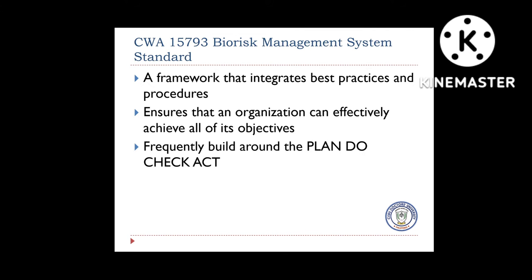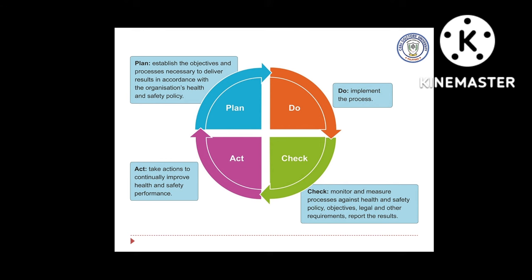A framework that integrates all best practices and procedures can be found in the CWA 15793 Biorisk Management System Standards. This ensures that an organization can effectively achieve all of its objectives and revolves around the Plan, Do, Check, Act cycle. In the Plan phase, you establish objectives and processes necessary to deliver results in accordance with the organization's health and safety policy. Then you Do — implement the process. Next, you Check — monitor and measure processes against health and safety policy, objectives, legal, and other requirements, and report results. Finally, you Act — taking actions to continually improve health and safety performance.